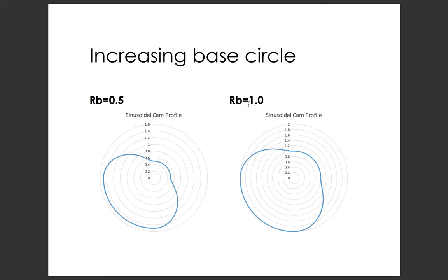For a flat follower, prime circle and base circle are interchangeable — they're the same. For a roller follower, the prime circle radius is what you start with, and the base circle is the prime circle minus the follower radius. So if I had a half-inch follower, my actual base circle would be a half inch and my prime circle would be one inch. For a flat follower they're the same thing because there's no offset function needed.